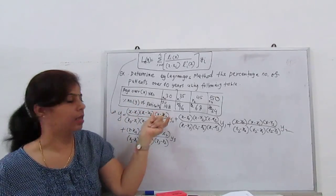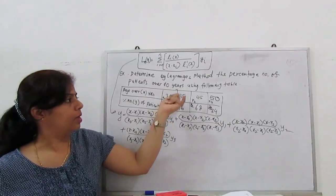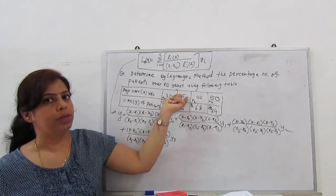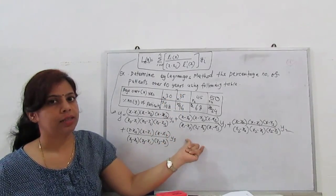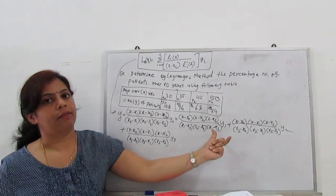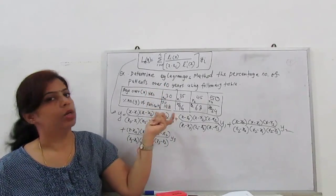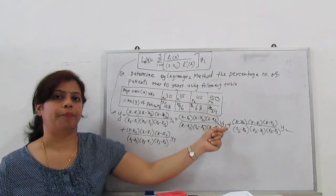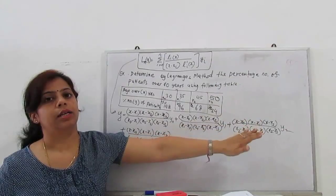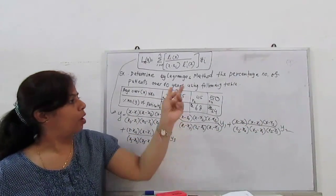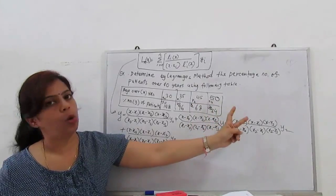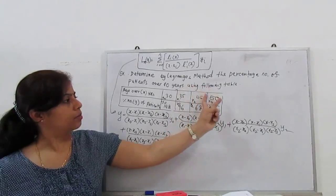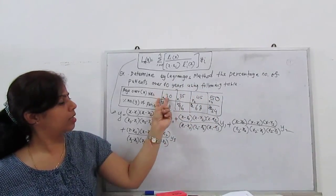Write in simple way: x0, x1, x2, x3 respectively y0, y1, y2, y3. Start with x0 going till end point. Numerator has no x0 term so (x-x1)(x-x2)(x-x3) over (x0-x1)(x0-x2)(x0-x3) times y0.